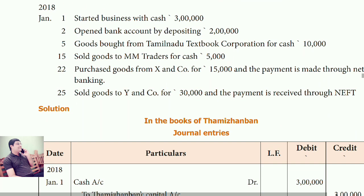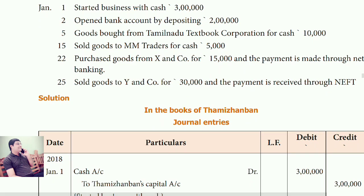See the first transaction: 2018 January 1, started business with cash of 3 lakhs. The journal entry is: Cash account debit, to Tami Zenban's capital account. Whatever name is given, you have to write it here.